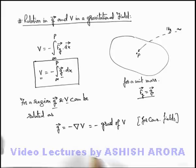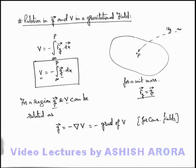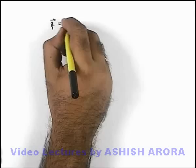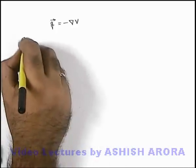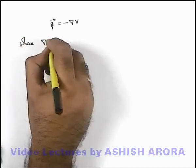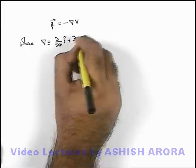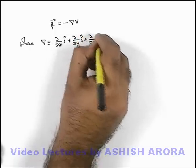If we substitute the values for unidimensional and 3-dimensional fields, continuing on the next sheet: the gradient relationship can be written between g vector and gravitational potential. The gradient operator is equivalent to del over del x î plus del over del y ĵ plus del over del z k̂.